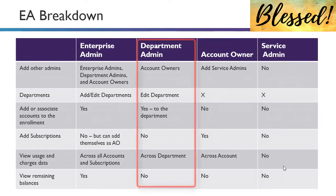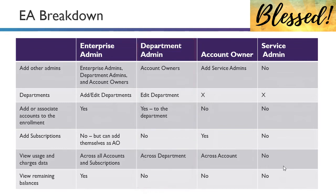The department admin sits in between: the enterprise admin can create departments, and people in those departments can create accounts, but only within their specific department. How much access you give out to departments depends on your trust in them and their ability to execute in Azure. All roles generally have the ability to view their usage and charges, while only the enterprise admin can view overall balances, since those are based on the enterprise commitment made with the Microsoft sales team.